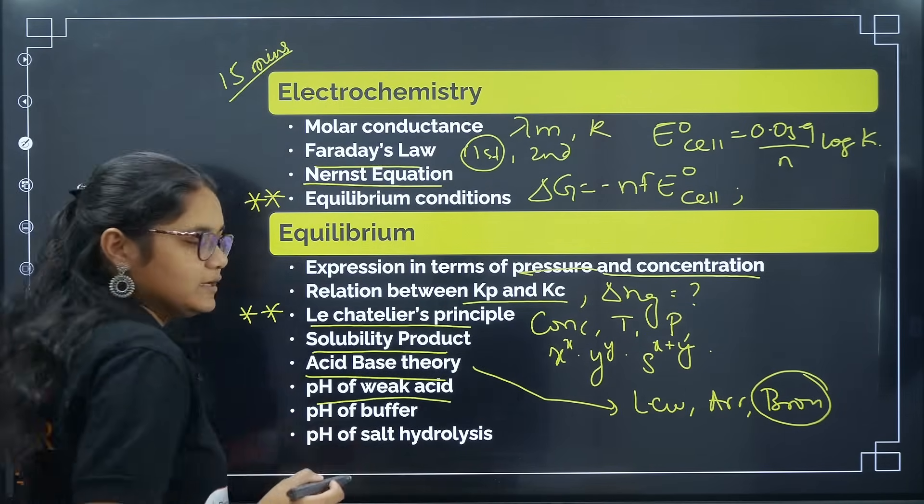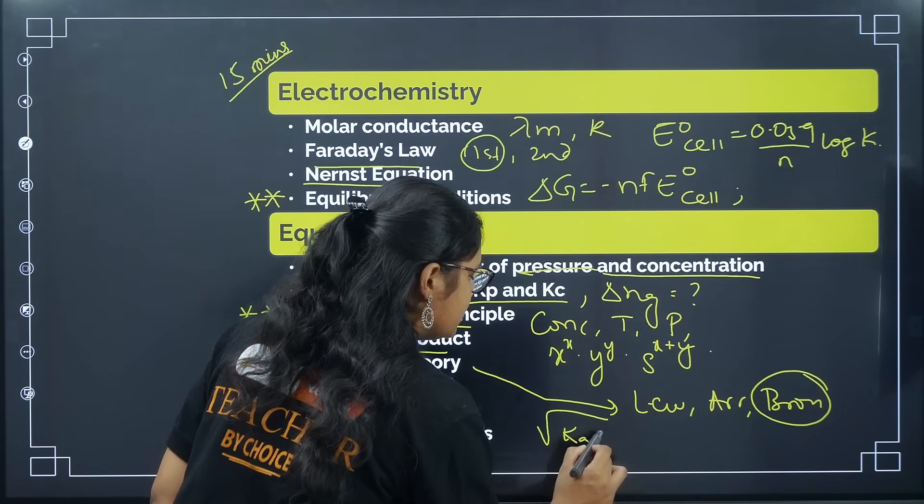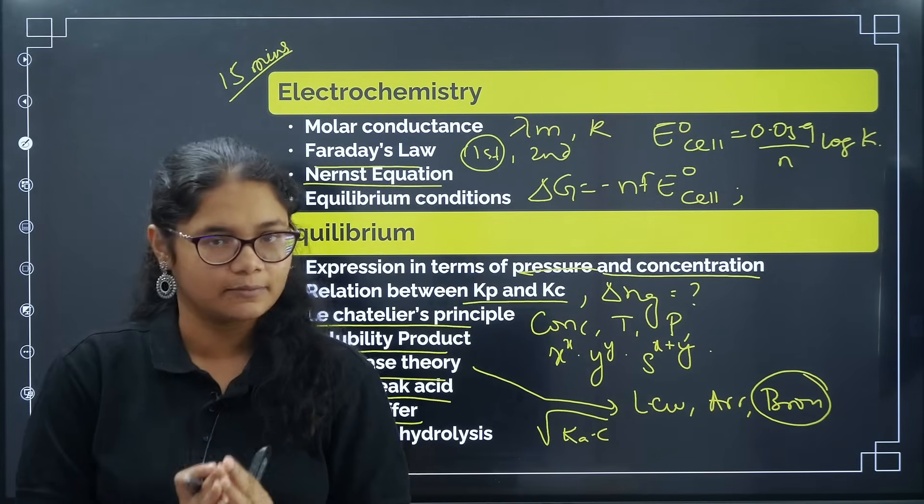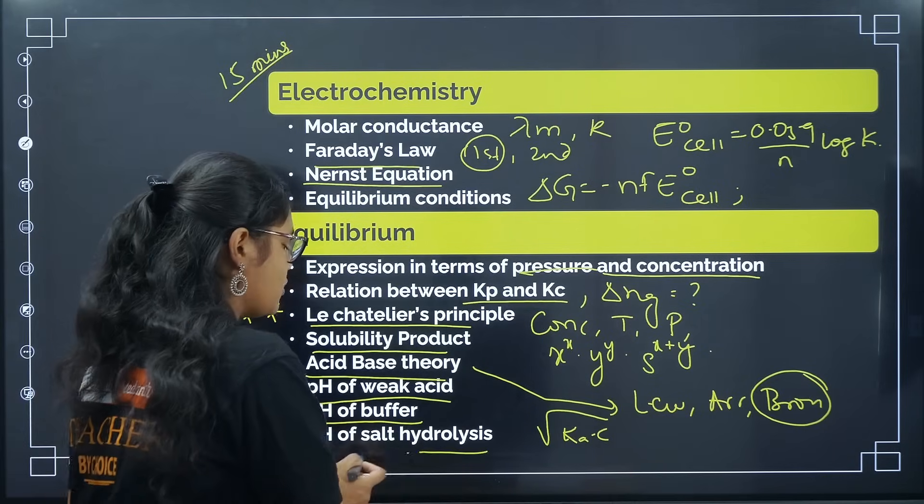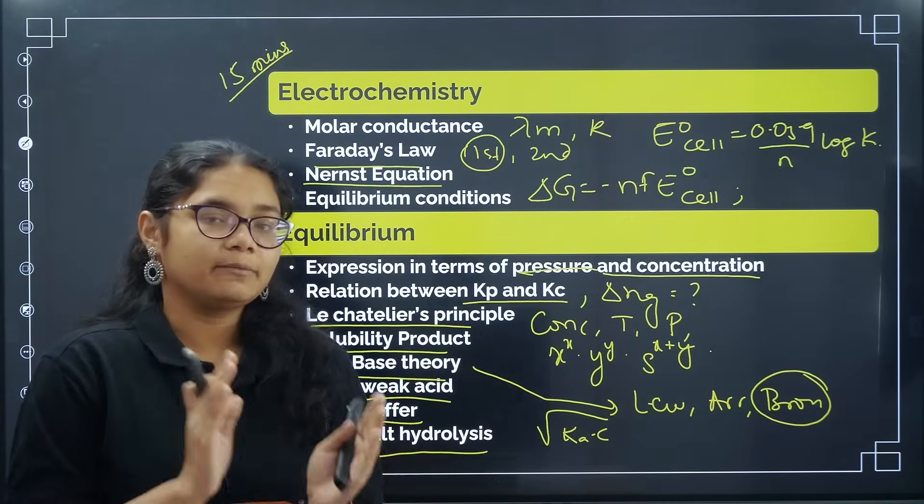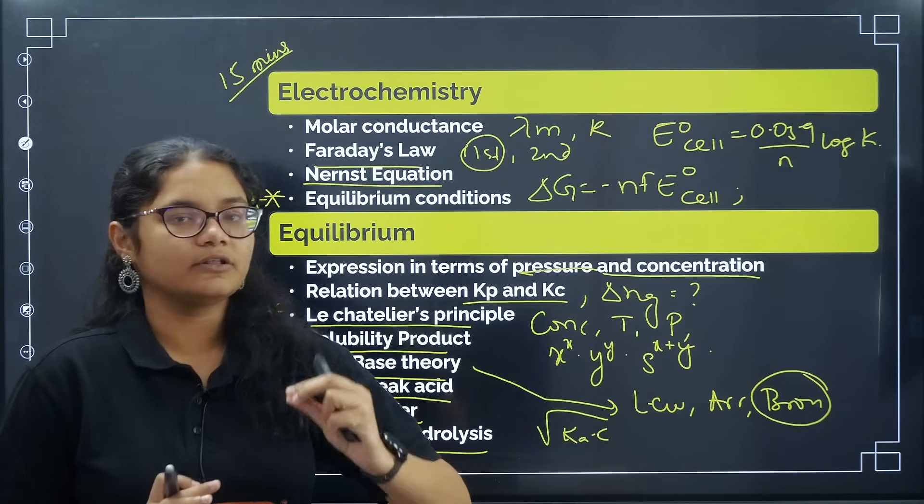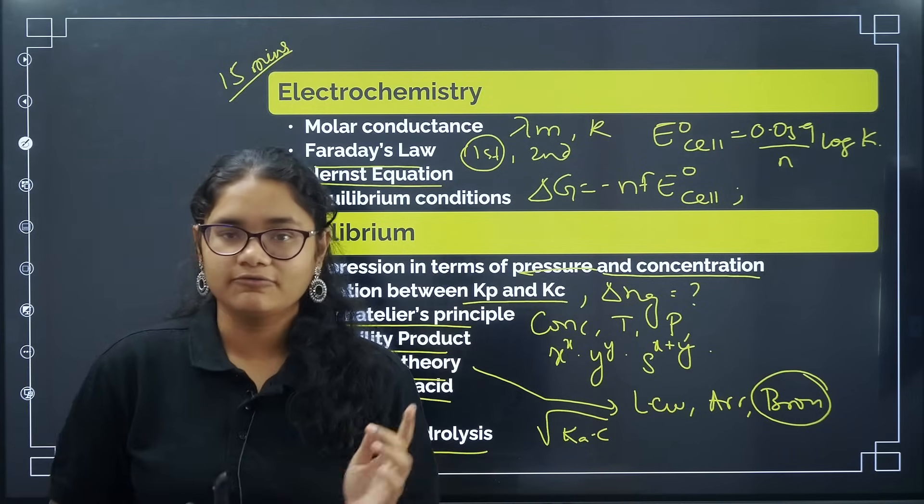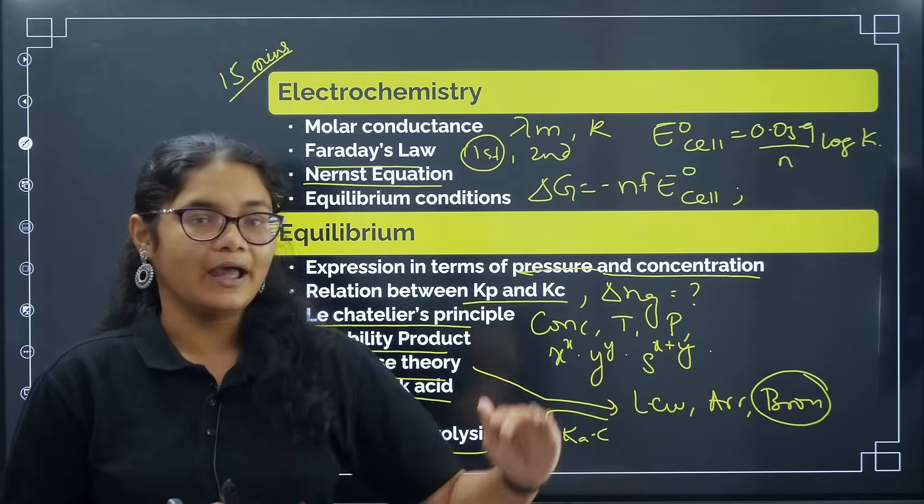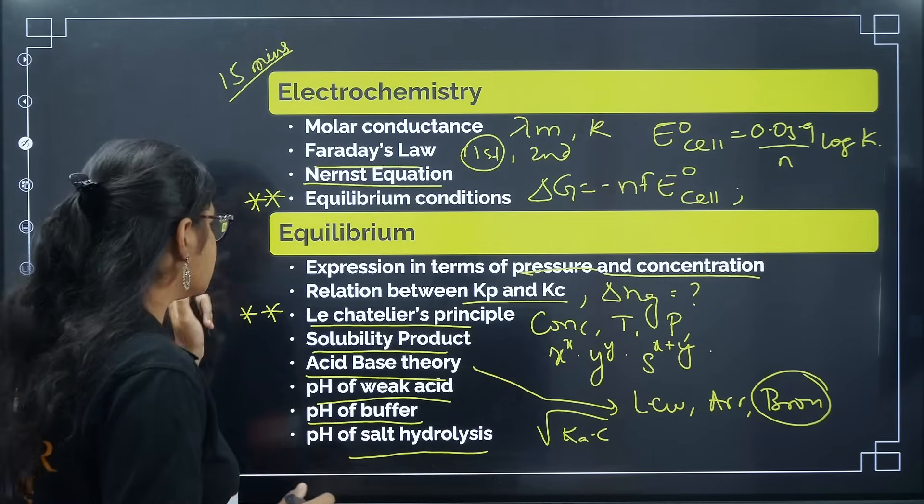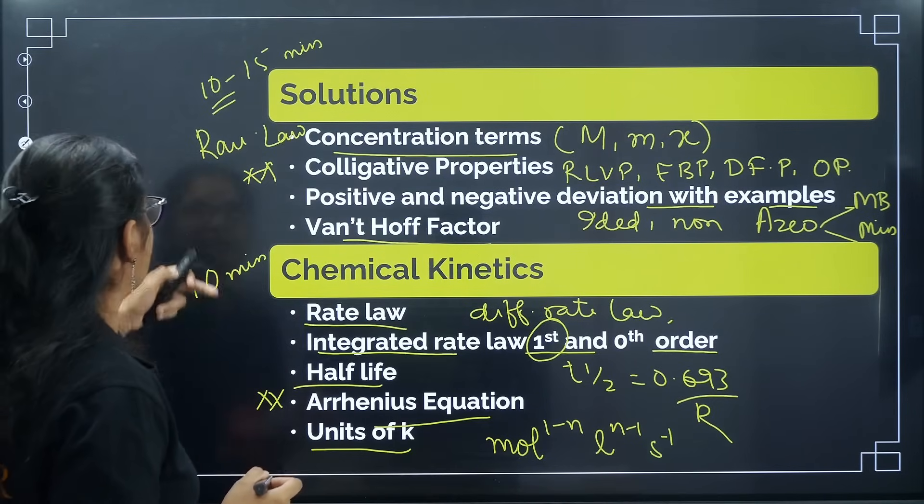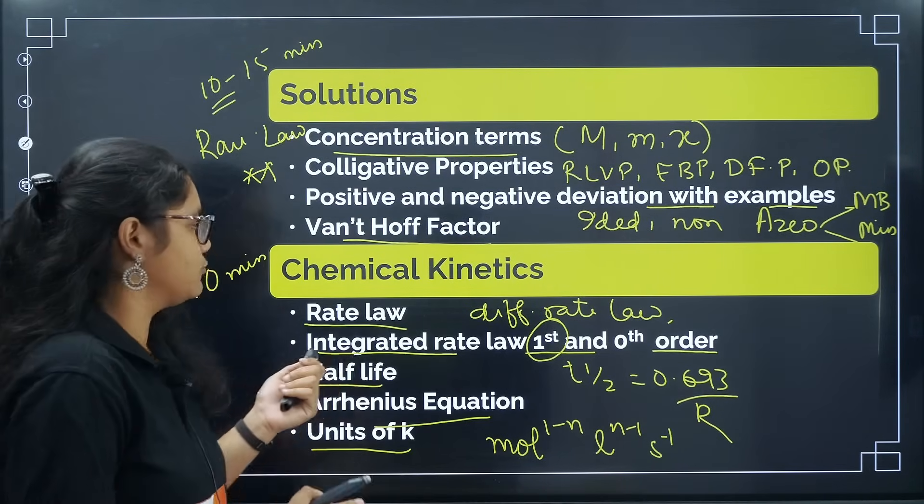Coming to acid-base theory, questions are asked like what is the conjugate base of this one, what is the conjugate acid of this one. Just prepare all the three acid-base theories: Lewis theory, Arrhenius theory and Bronsted theory. Bronsted theory is very important where you have to find the conjugate acid and conjugate base. Next, pH of weak acid - this formula: root over of Kb into C or root over of Ka into C. Then pH of buffer - there are two types of buffer, acidic buffer and basic buffer. Then pH of salt hydrolysis - we have three types of salts: weak acid weak base, strong acid weak base and weak acid strong base. In my video for important formulas in physical chemistry, I have discussed all these formulas, so you can do this 10-15 minute video.